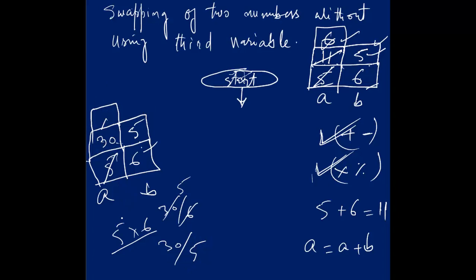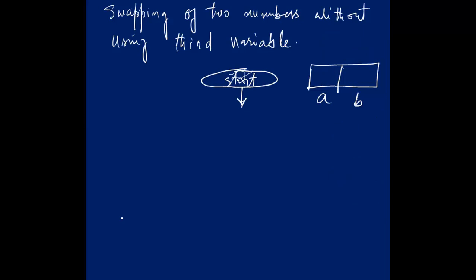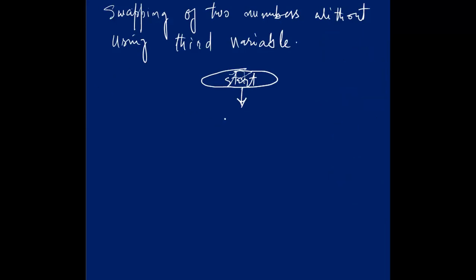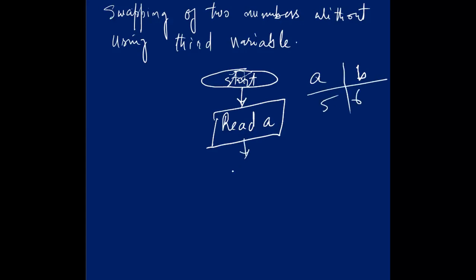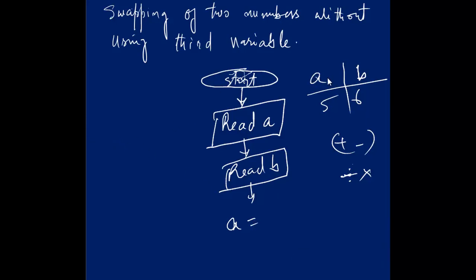Now I will try to draw a flowchart of it. This was the algorithm for how we can swap without using a third variable. Here I will write: Start, then Read A and B — A is 5, B is 6. The new value of A will be equal to A plus B, using the addition and subtraction method.